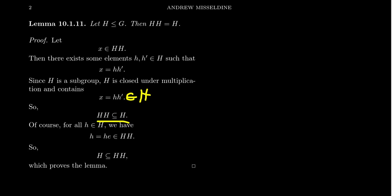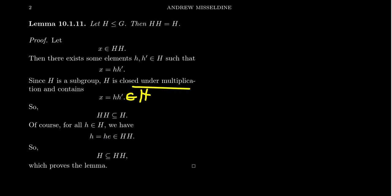HH is contained inside H. The other direction is fairly simple: if I take something h in H, then h can be factored as h times the identity. Since it's a subgroup, it contains the identity, and h times the identity equals h — but that's also a product of things inside H. So h will be part of HH, and that gives us the other direction. Notice we assumed H was a subgroup and used closure under multiplication and inclusion of the identity. We actually don't need inverses to make this property hold.